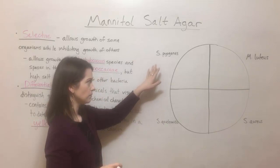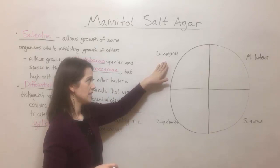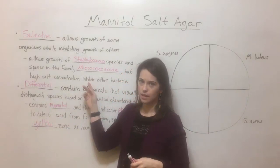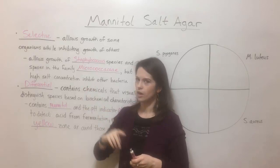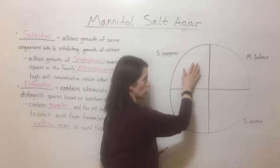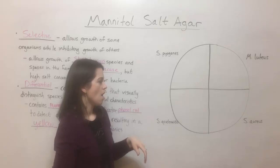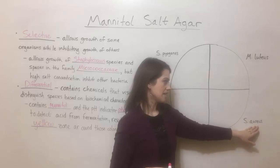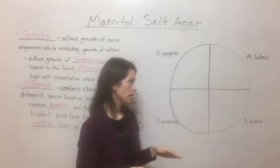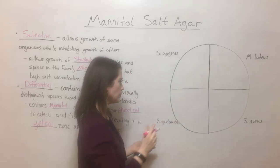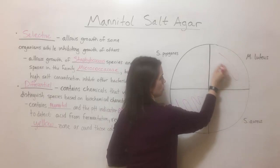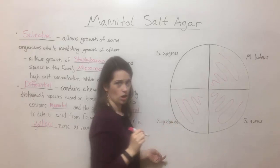The first one we'll consider is Streptococcus pyogenes. Streptococcus pyogenes is a member of the Streptococcus genus, and that is one of the types of bacteria inhibited by this agar — meaning that even if a culture was added to this quadrant and the plate was incubated, nothing is going to grow. On the other hand, Staphylococcus epidermidis, Micrococcus luteus, and Staphylococcus aureus are all going to be able to grow on mannitol salt agar because they are members of either the Staphylococcus genus or the Micrococcaceae family. So that's the selective portion — these three can grow and Streptococcus is inhibited.